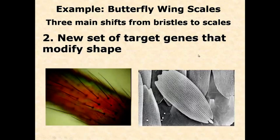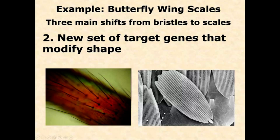The next step involves a brand new set of genes that modify the shape of these structures. Initially they were hair-like in shape — setae (S-E-T-A-E, plural; seta, singular) is the more proper term, as they're not analogous to mammalian hairs. These setae are modified into a flattened, scale-like structure, and we can even track the genes that made that modification. They're still obviously just modified versions of the setae we find all over the body and along the wing margins of insects. So first we change their domain, then we flatten them out.